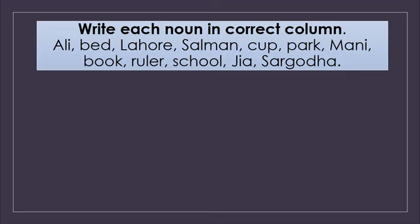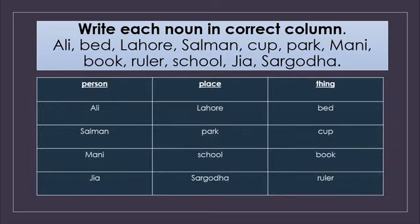I have given you a worksheet in your homework, where you have to separate the nouns according to the given columns: person, place and thing. The question is: write each noun in the correct column. The nouns are Ali, bed, Lahore, Salman, cup, park, money, book, ruler, school, Jia, Sargoda. So we have to separate them according to the columns: person, place and thing.